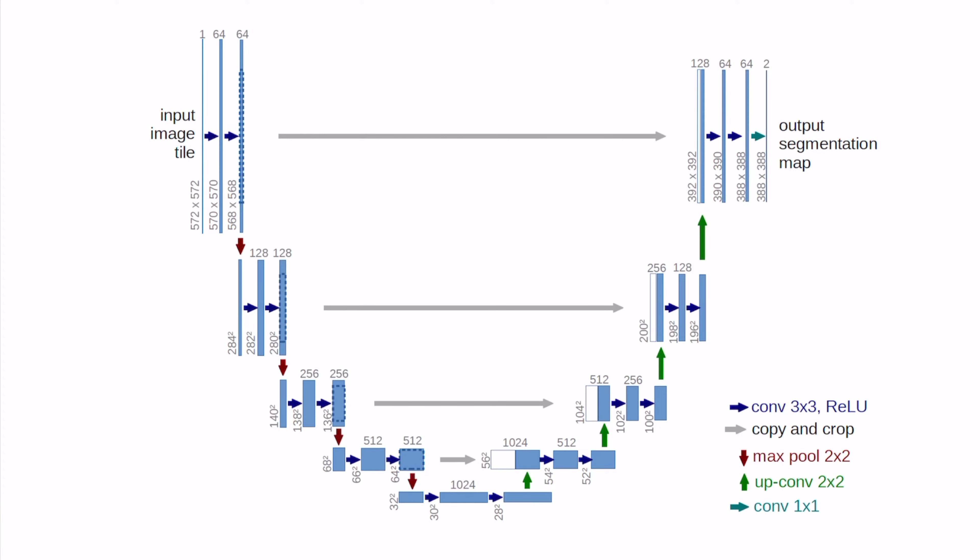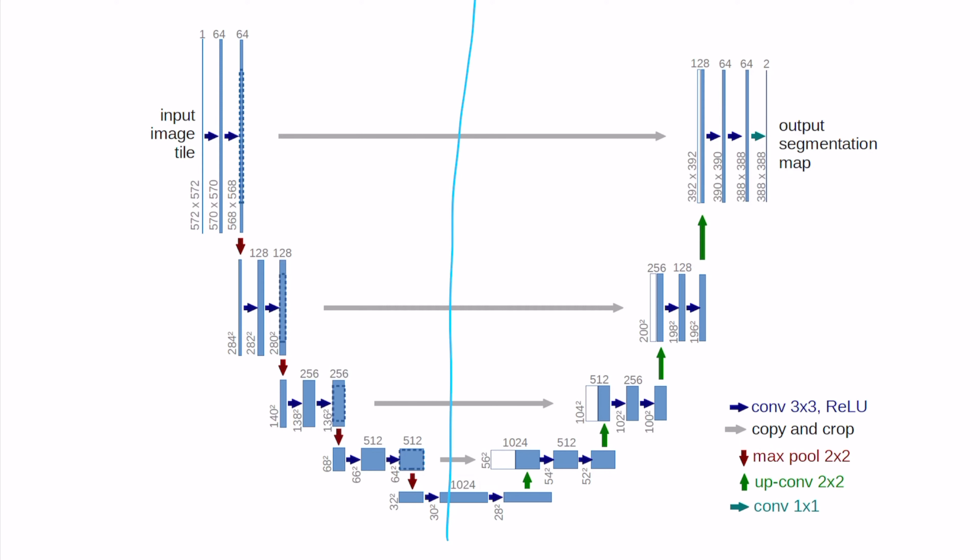Looking at a picture of the U-Net architecture, you can now understand why it's called U-Net. The U-Net architecture basically consists of two parts: the encoder and the decoder. The encoder tries to understand the 'what' of the image, doing so by using convolutions and max pooling, as is quite usual in convolutional neural networks.